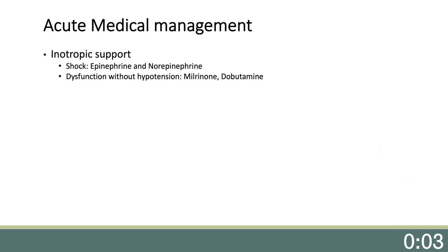The medical management of RV failure is to support the RV and circulation with inotropes. If the patient is in shock, they will need epinephrine to support right ventricular function, and possibly norepinephrine to increase systemic pressure without excessively increasing myocardial demand. If the patient has severe RV dysfunction but maintains arterial blood pressure, milrinone or dobutamine may improve RV inotropy. Both drugs cause systemic vasodilation; milrinone has lasting effects, especially in the setting of acute kidney injury.